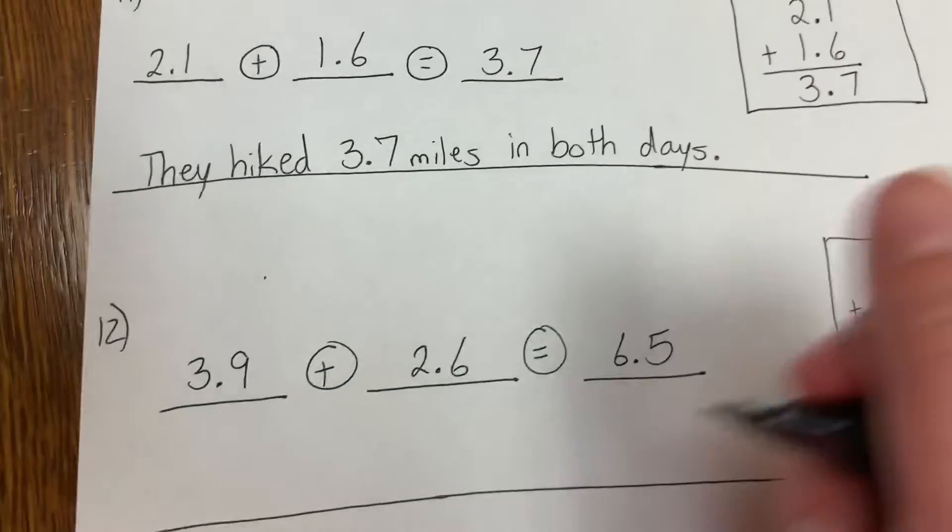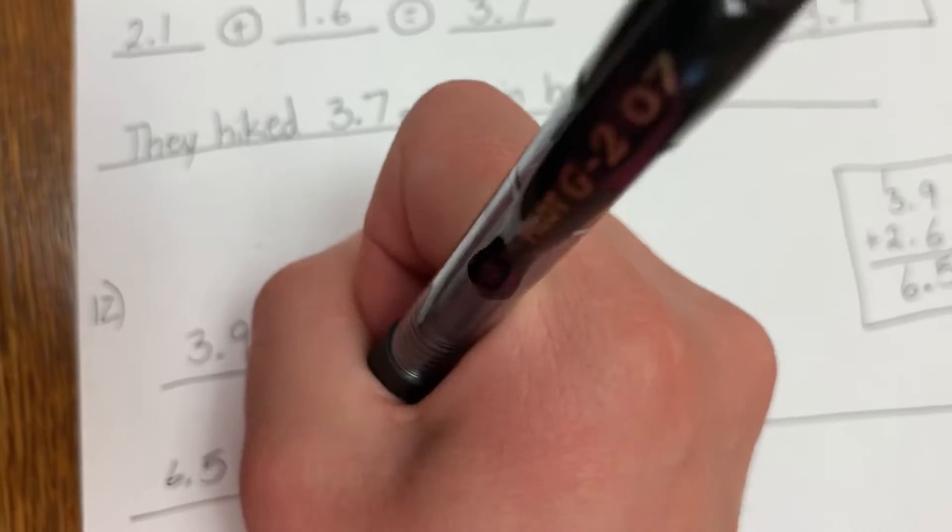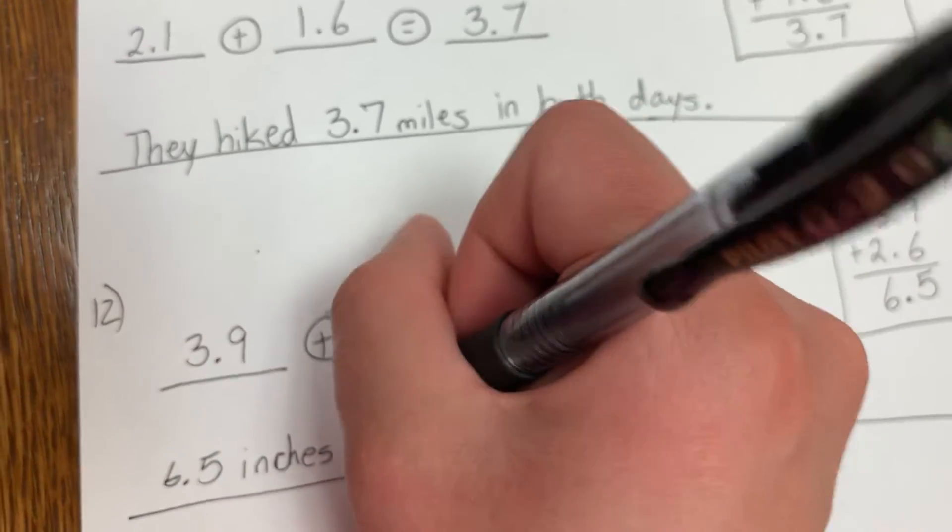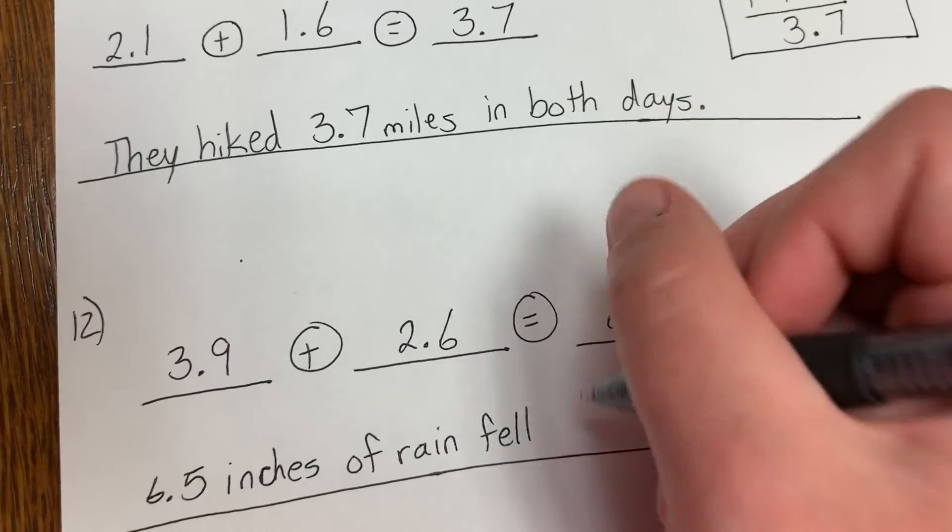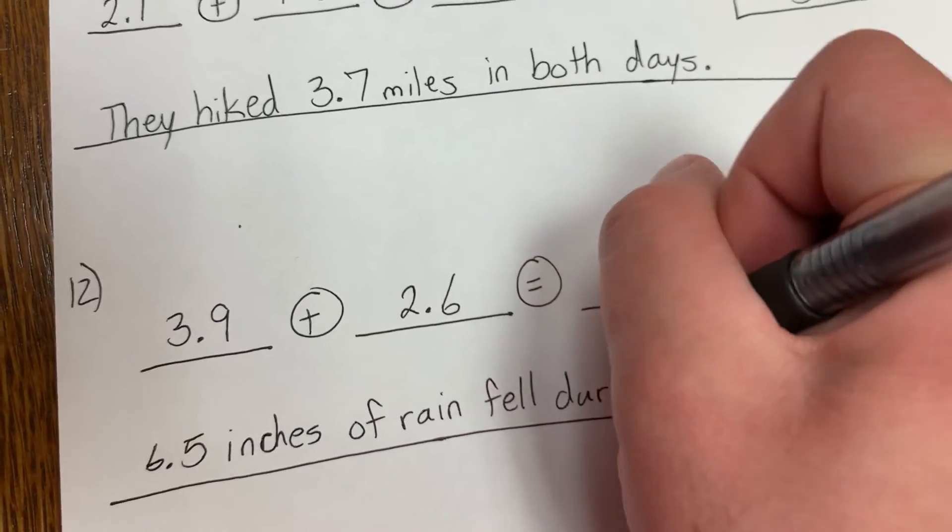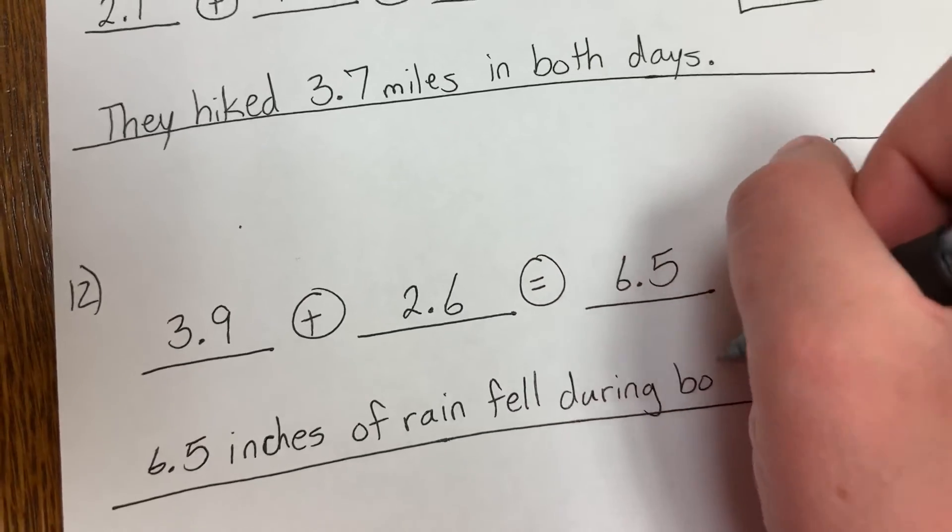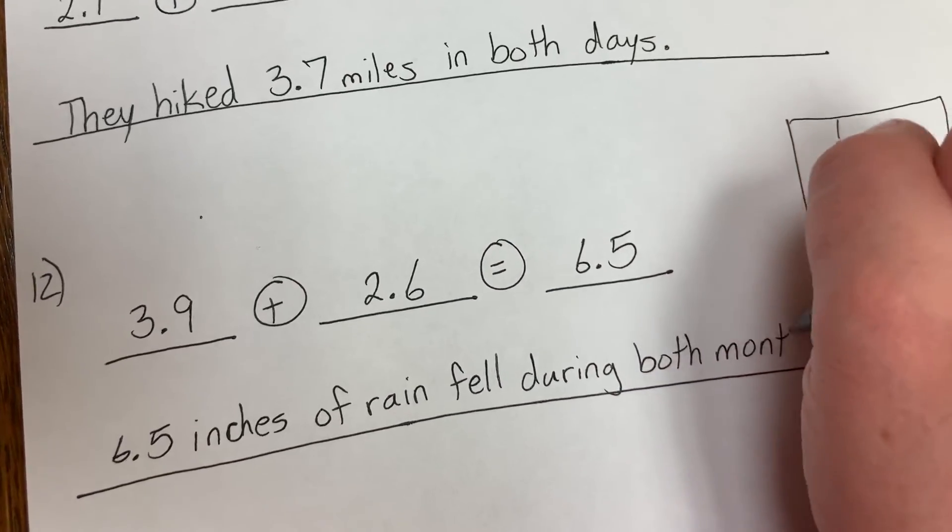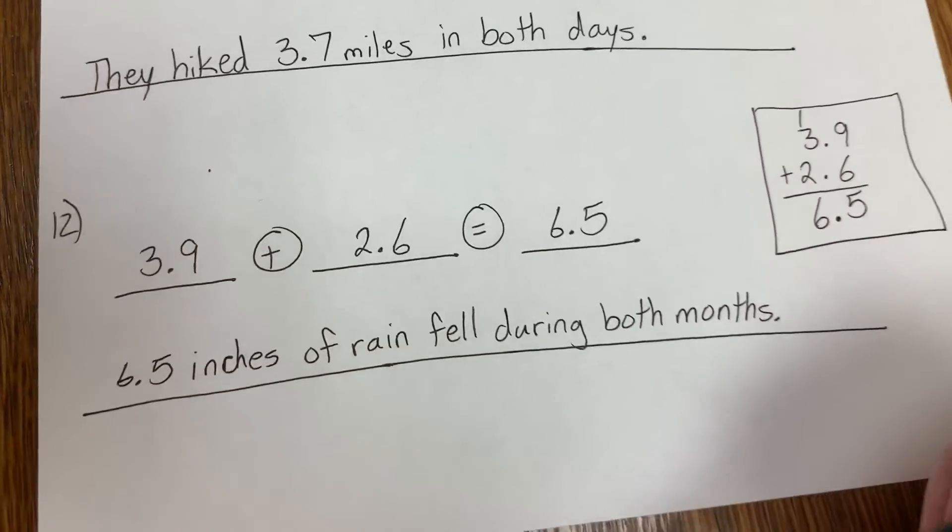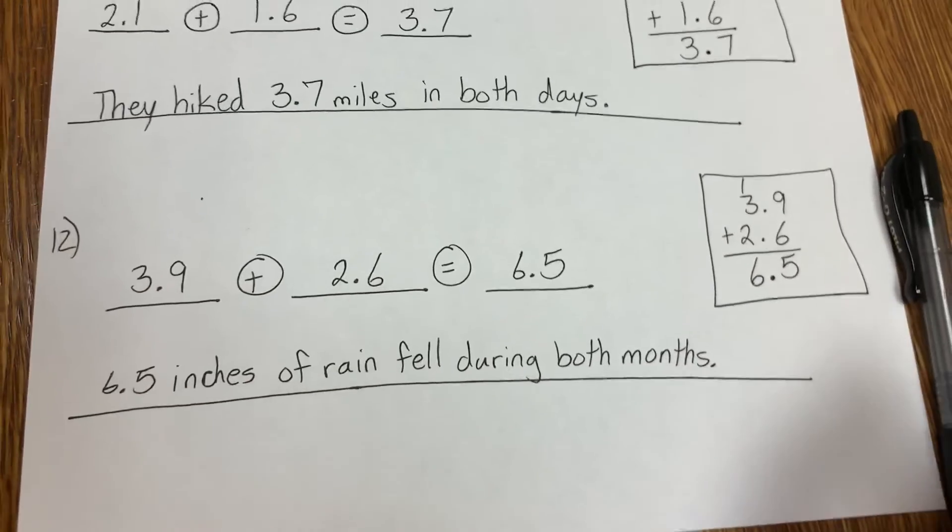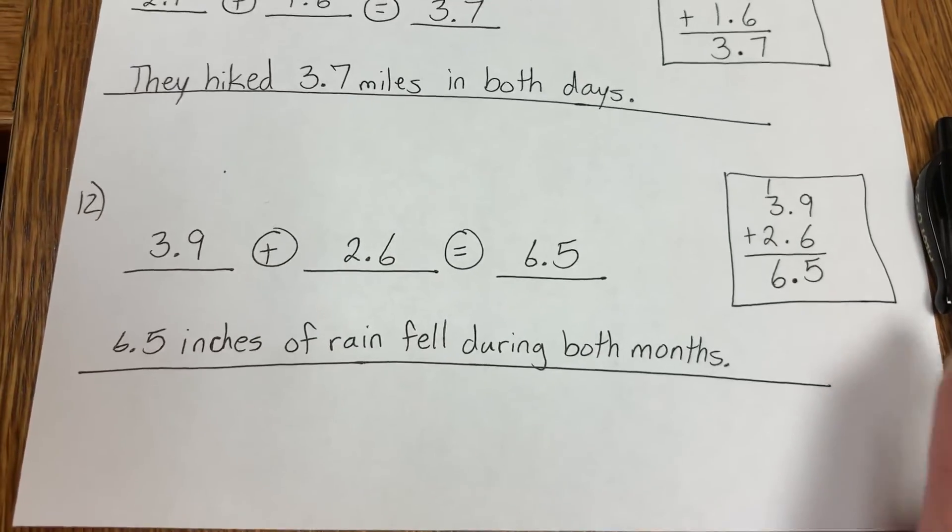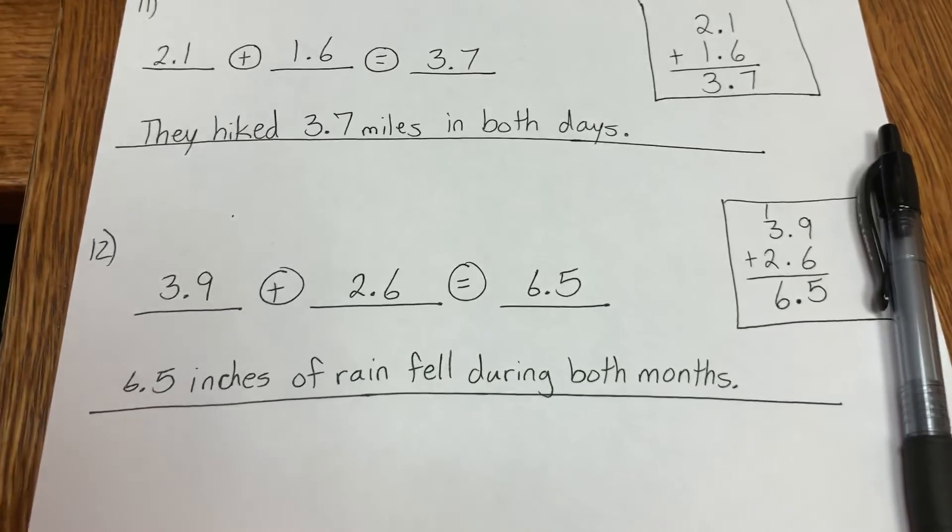And write a sentence: 6.5 inches of rain fell during both months.